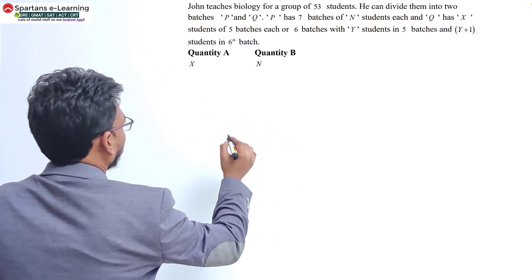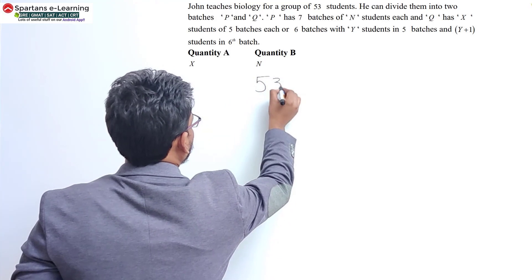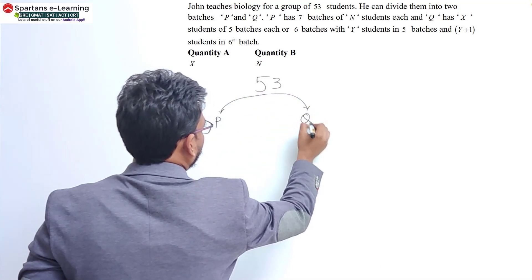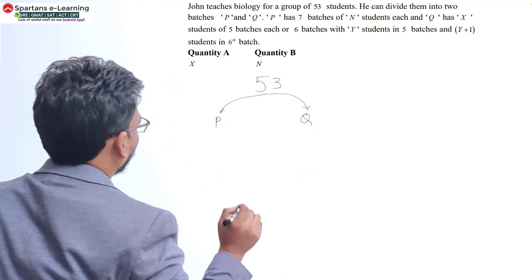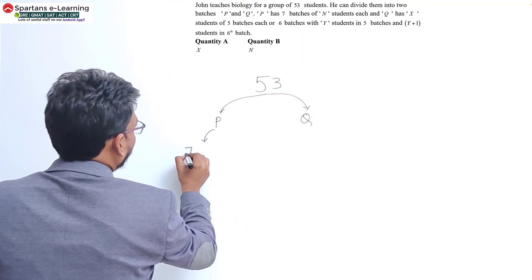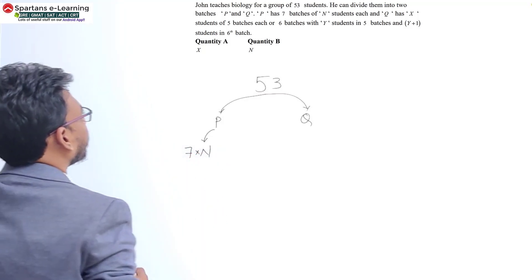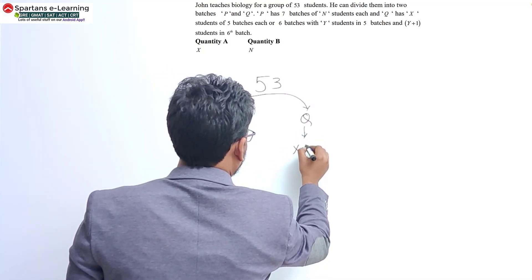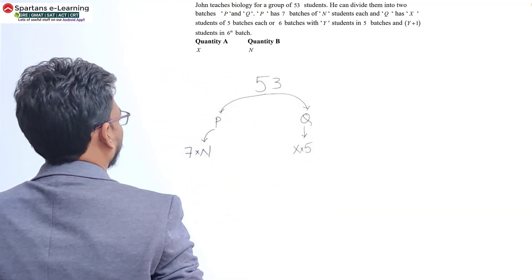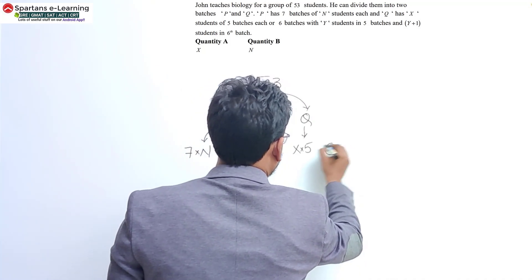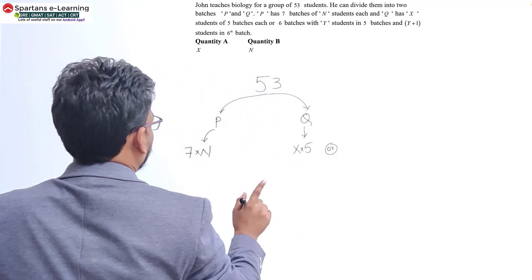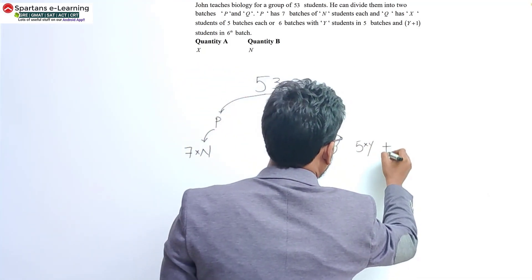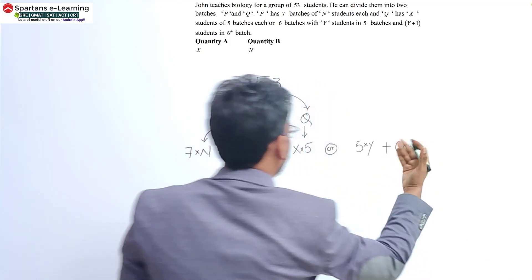John teaches biology for a group of 53 students, so there are 53 students. He divides them into two batches: first batch P and second batch Q. P has seven batches of N students each — that is 7N. Q has X students of five batches, so that is 5X. Or alternatively, six batches with Y students in five batches and Y plus one students in the sixth batch.